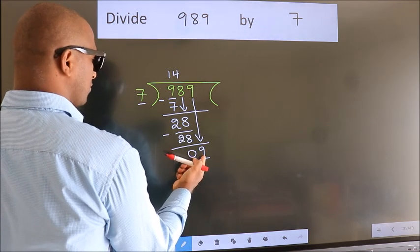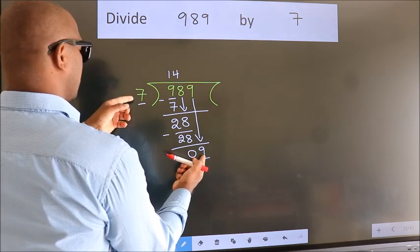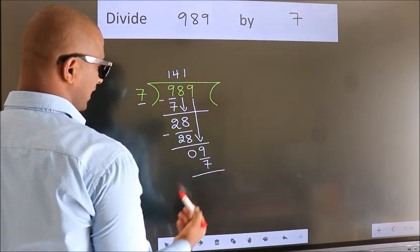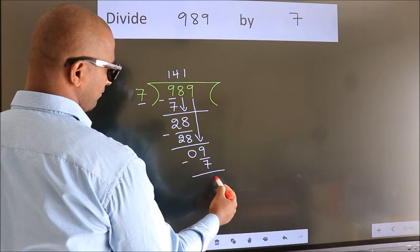A number close to 9 in 7 table is 7 once 7. Now, we subtract. We get 2.